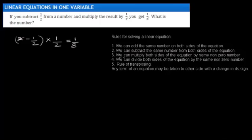We already know that we can multiply both sides of an equation by the same non-zero number. Let us multiply both sides of the equation with 2. We will get x minus 1/2 multiplied by 1/2. We will get 1/8 multiplied by 2. This 2 and this 2 cancels out, and 2 goes into 8 four times. We will get x minus 1/2 equals 1/4.